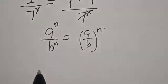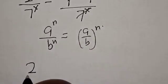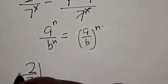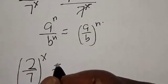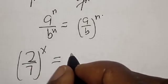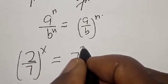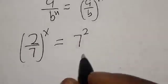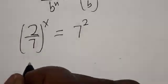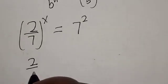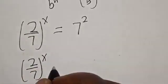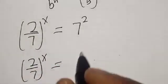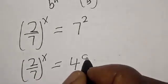The left-hand side becomes 2 over 7 raised to power s is equal to 7 squared, that is 49.